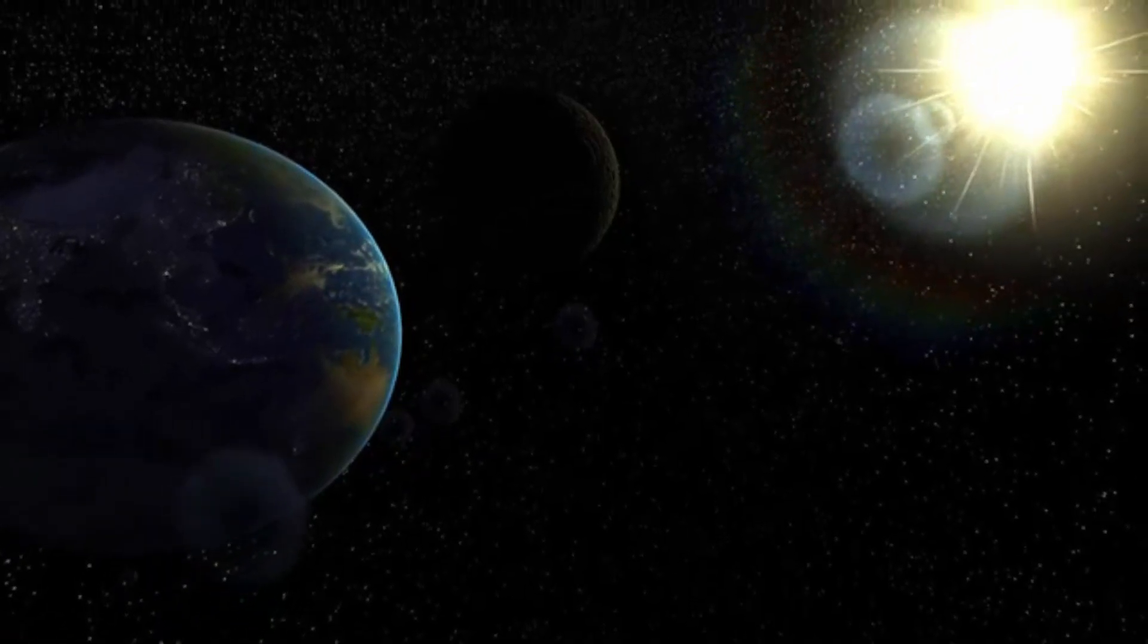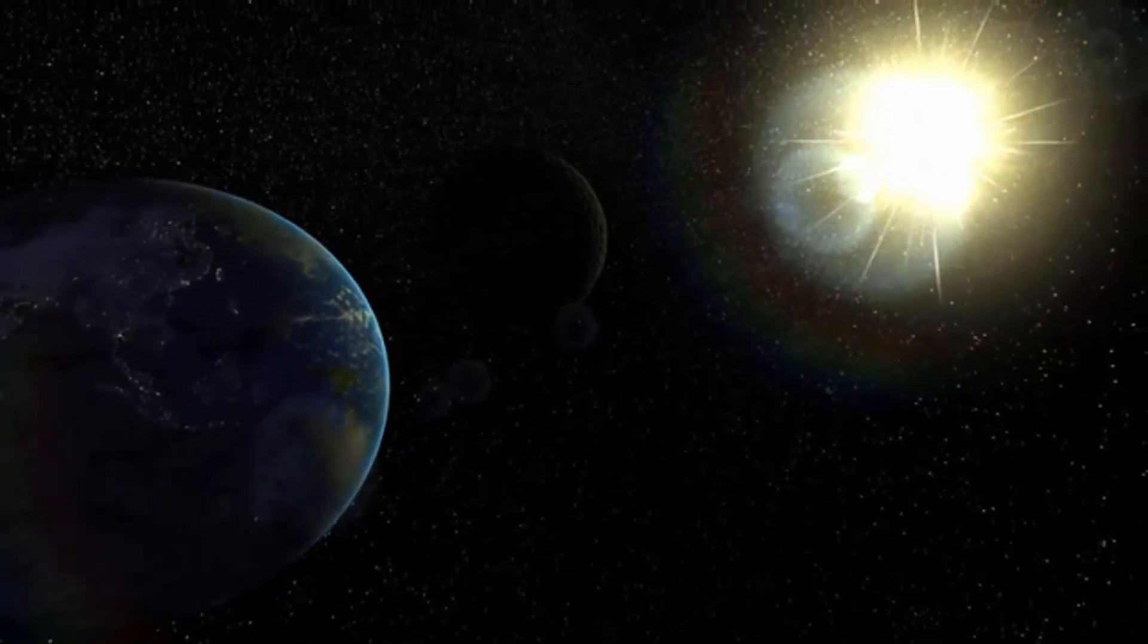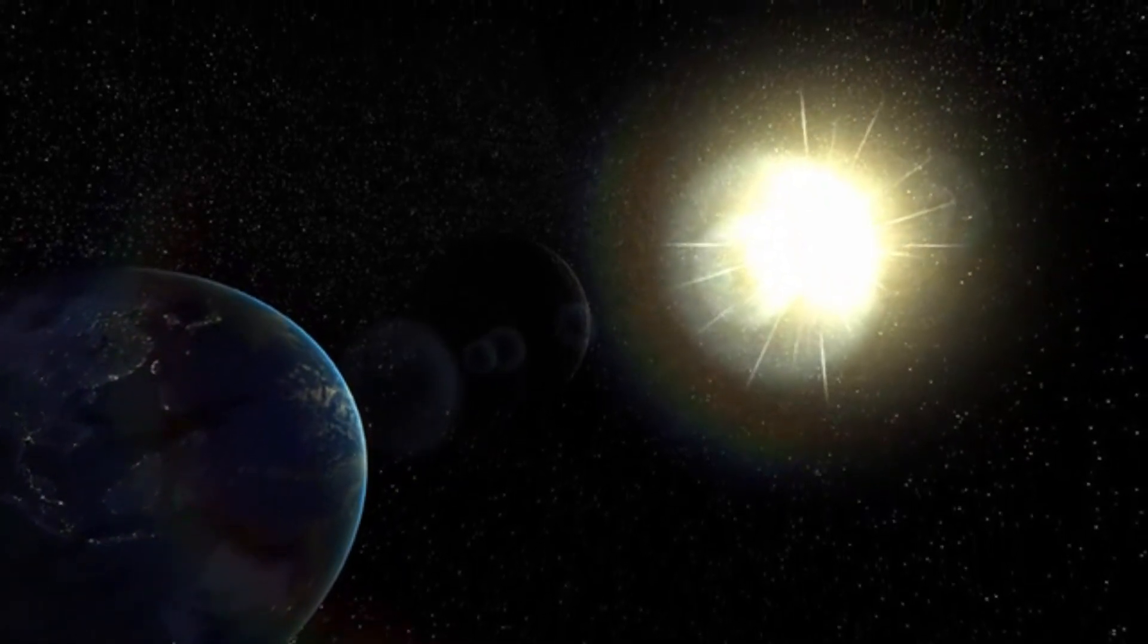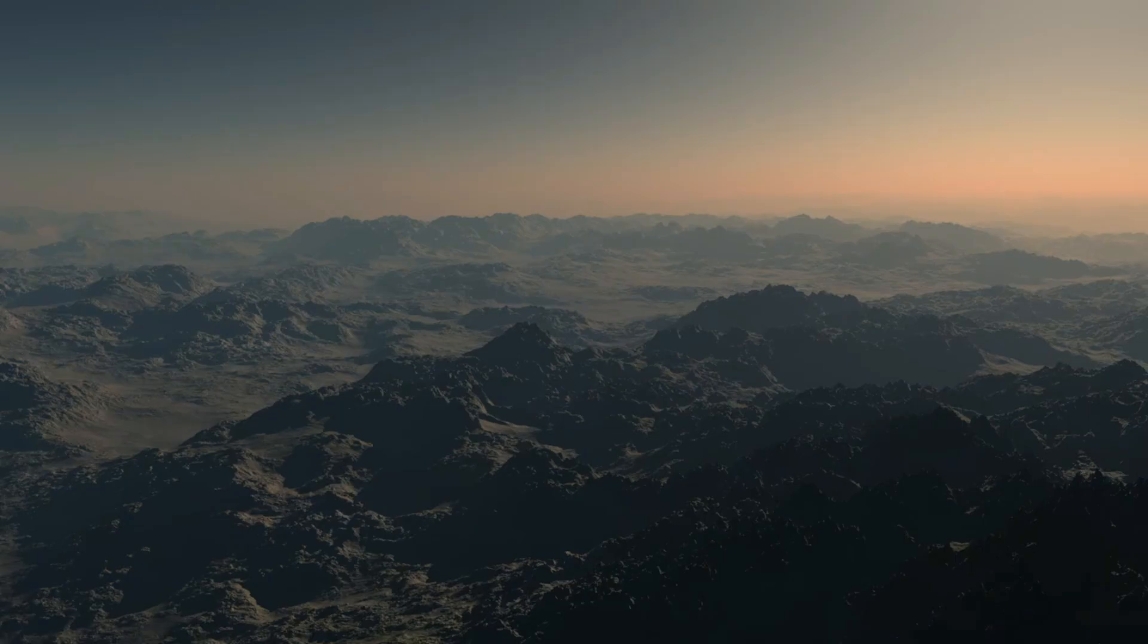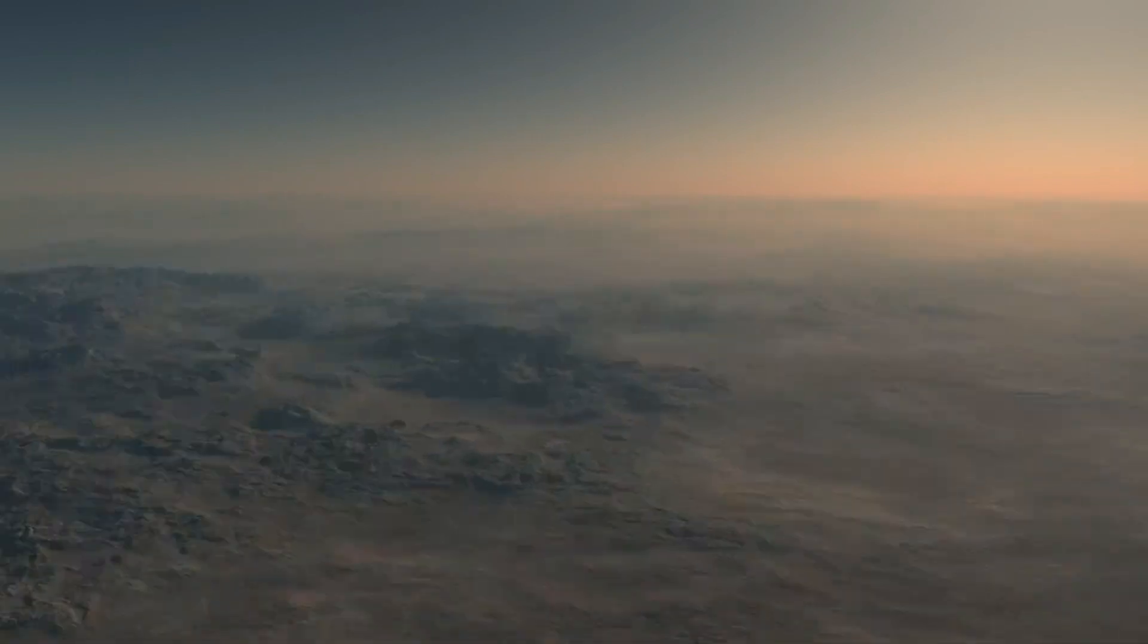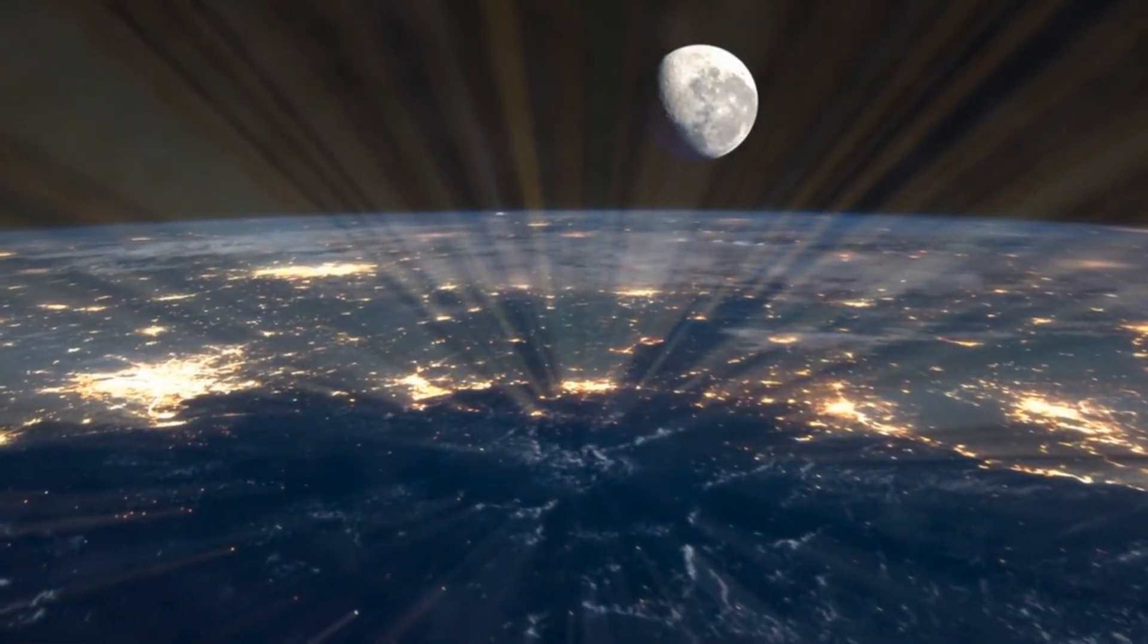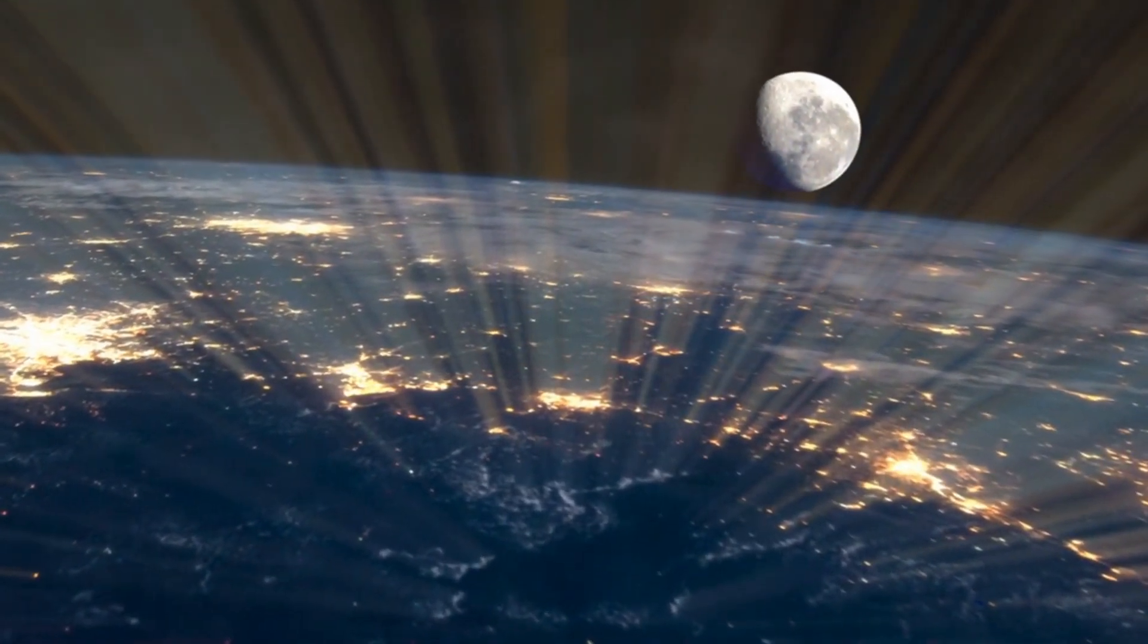Proxima b orbits within the habitable zone of its parent star, Proxima Centauri, a red dwarf star that is closer to Earth than any other known star. This positioning means Proxima b has the potential to support liquid water, a crucial ingredient for life as we understand it. However, several challenges may impede the development of life on the planet. Proxima Centauri is known for its intense stellar activity, including powerful radiation bursts that can strip away planetary atmospheres and make it difficult for life to thrive.